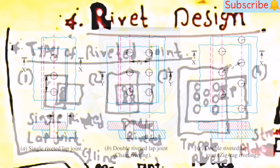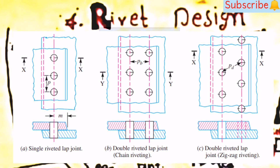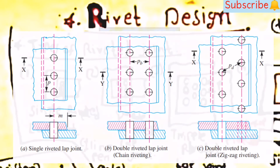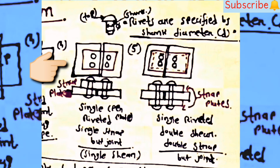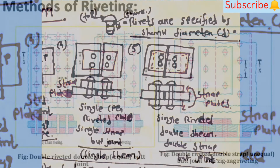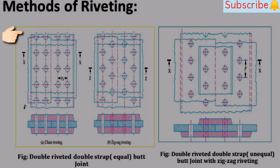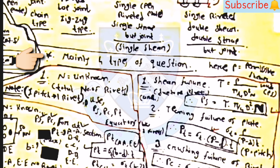The last topic is rivet design. Types of riveted joints include: single riveted lap joint, double riveted lap joint, single riveted single strap butt joint, and single riveted double shear double strap butt joint. There are mainly four types of questions from rivet design: first, where n (number of rivets) is unknown; second, where n is known; third, where pitch p is unknown; and fourth, where eccentric loading is given.